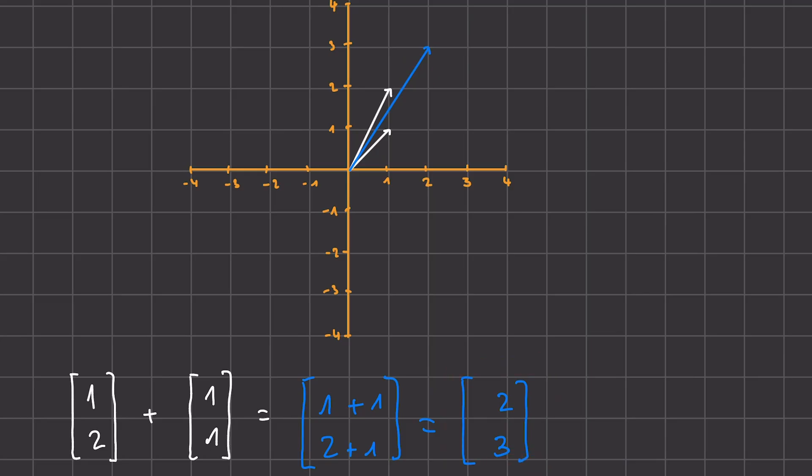And you can see that the order at which we apply these vectors does not matter. So we can first go to this second vector, and then apply the first one, which was 1, 2, and get to the same point as when we first apply this 1, 2 vector, and then the 1, 1 vector.